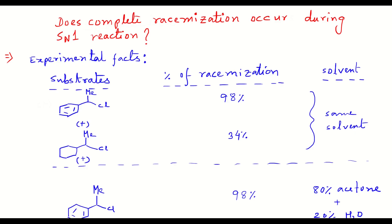From the knowledge of the mechanism of SN1 reaction, one can expect that during any SN1 reaction there should be 100% racemization for that particular reaction if we start from an optically pure stereoisomer. However, here are some experimental facts which raise the question: does complete racemization occur during SN1 reaction?